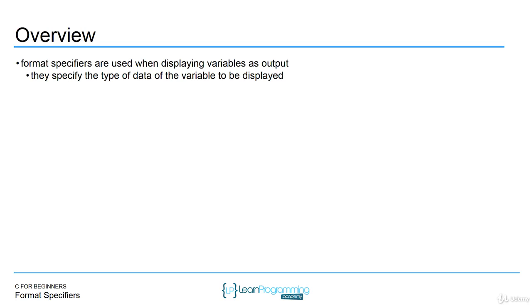Format specifiers are used when displaying variables as output. You can also use them for converting data, but we're just going to talk about using them as output for now. They specify the type of the data of the variable that you want to display.